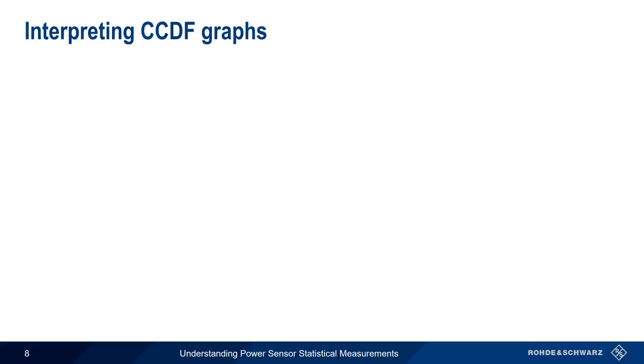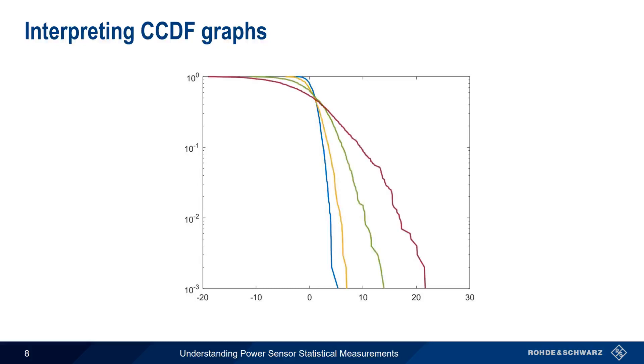The more the CCDF curve moves to the right, the more frequently our signal takes on values that are significantly above the average value. For example, a signal whose amplitude is more or less constant over time will appear as an almost vertical line in our CCDF graph. But as the signals begin to have greater amplitude variation, the trace moves more and more towards the right.